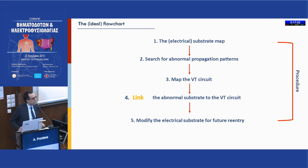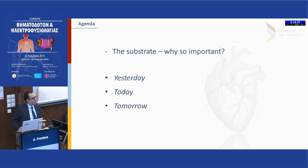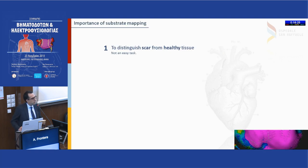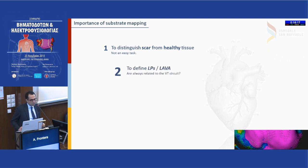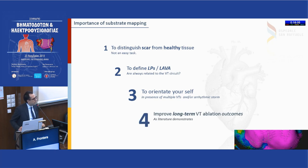The whole VT ablation procedure has two parts: first, the mapping and the ablation — you're treating the patient. Then there is a second part represented by prevention — you link the abnormal substrate to the VT circuit and abolish every late potential expression of slow conduction, so you prevent the patient from coming back to the lab. Today's agenda: why is the substrate so important, how do we define it, and how do we improve the long-term outcome of VT ablation?